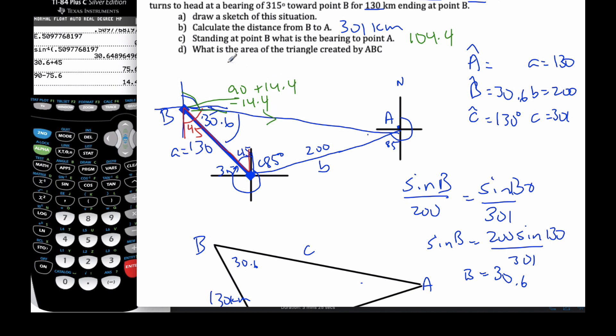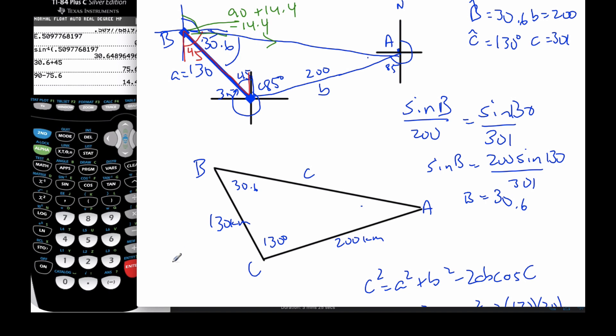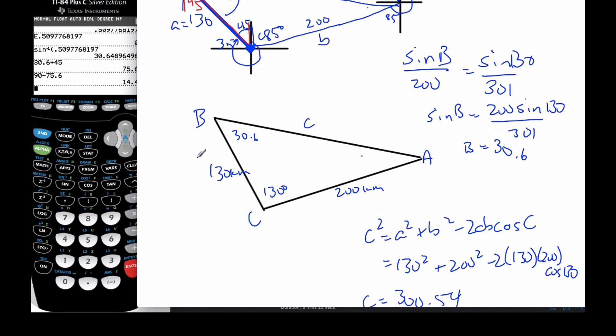And then finally, what is the area of triangle created by ABC? Well, I use my area formula that we figured out before. Area is equal to, if I have this angle here, I'm going to say half my included sides, 130 times 200, the sine of 130 degrees here.